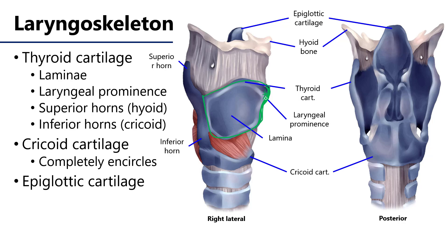That laryngeal prominence tends to be more prominent in individuals with higher levels of testosterone. There are two sets of horns: a superior horn, which comes very near to the greater horn or cornua of the hyoid bone, and an inferior horn. That inferior horn is going to form a joint with the cricoid cartilage — the cricothyroid joint — which allows for a pivoting motion of the thyroid cartilage.